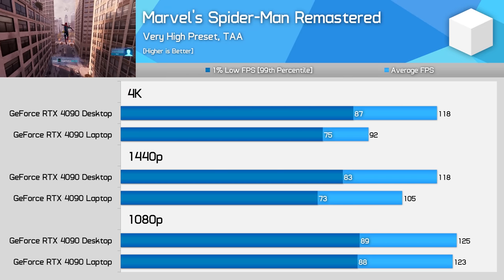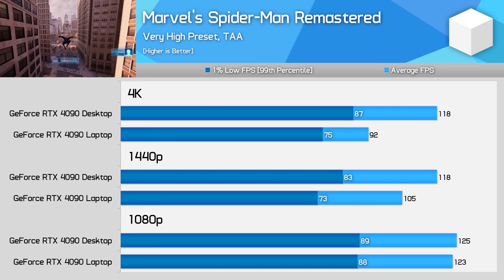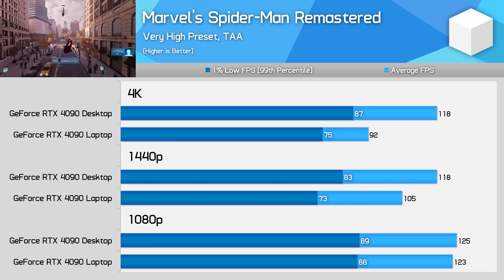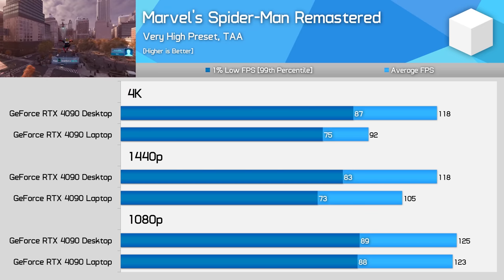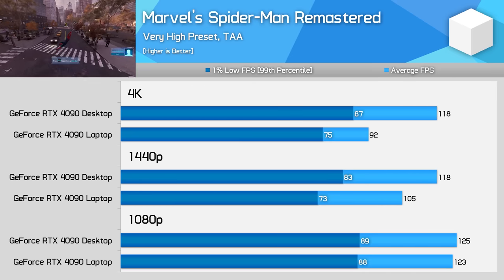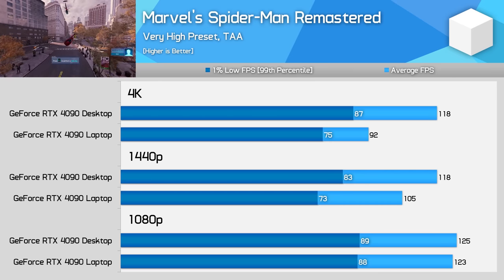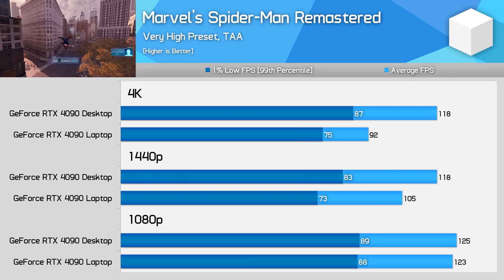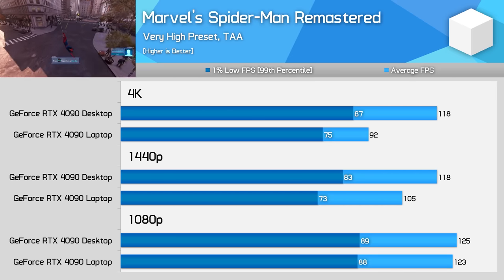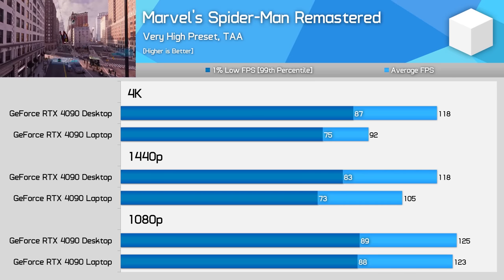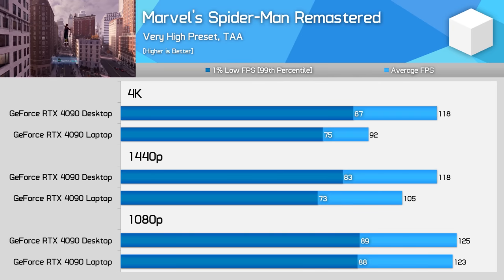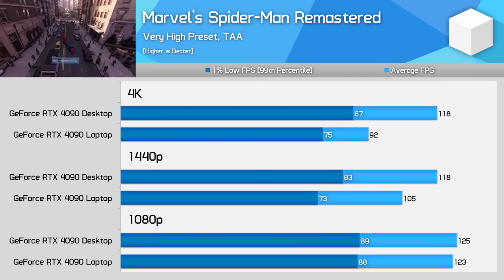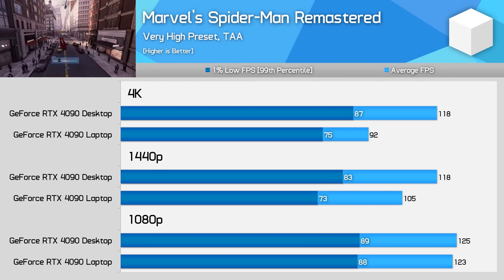At 1440p, the desktop card was only 12% faster, and even at 4K, it held just a 28% margin, which was the slimmest of any rasterised game that I tested. Desktop configuration is still preferable, but laptop gamers will be happy to know they are still getting a reasonable level of performance relative to the desktop.